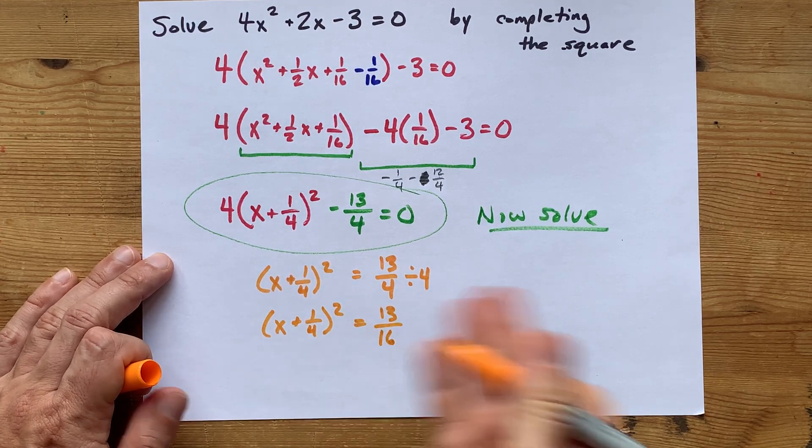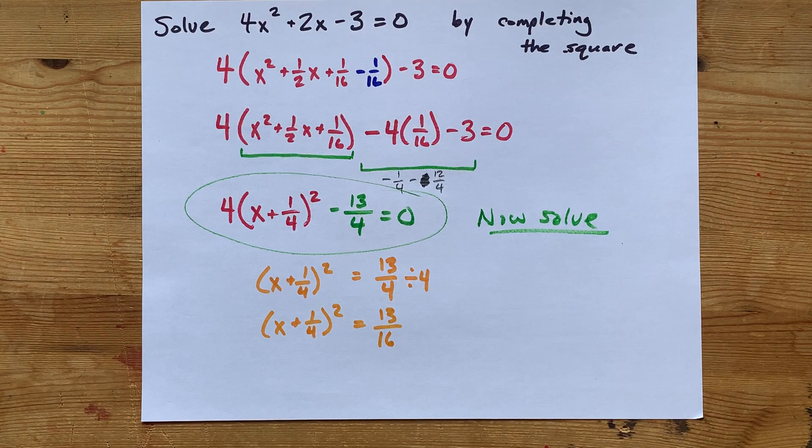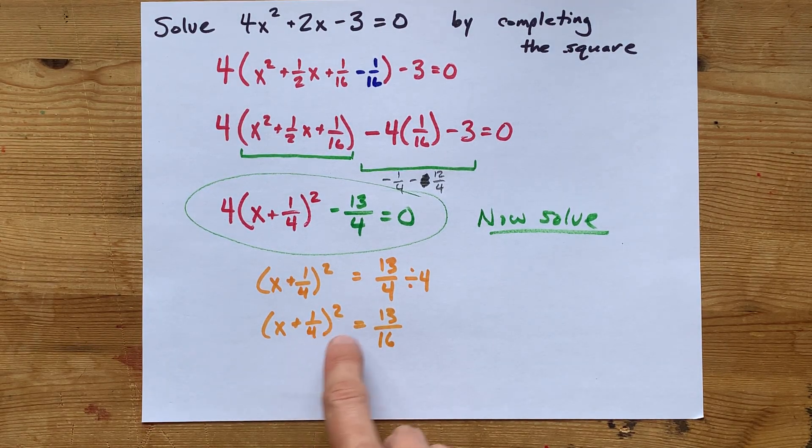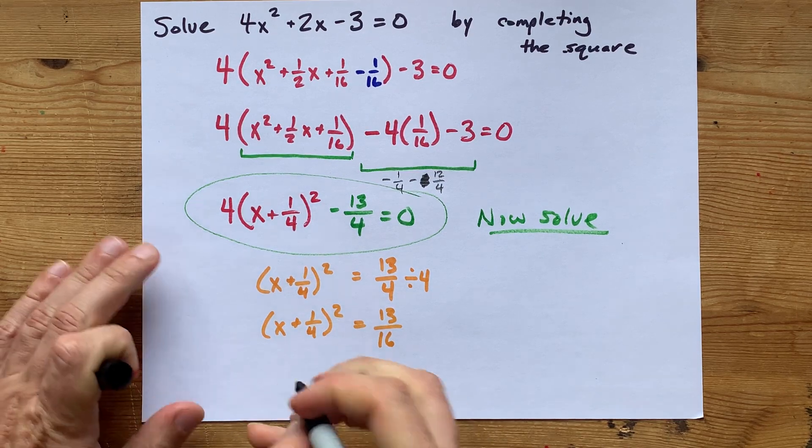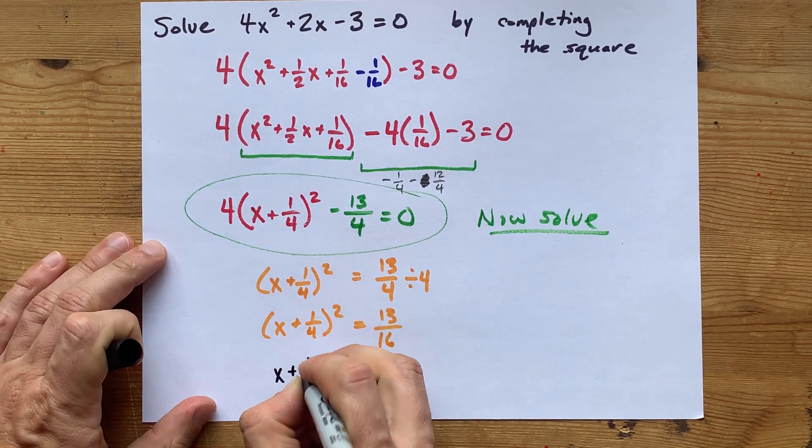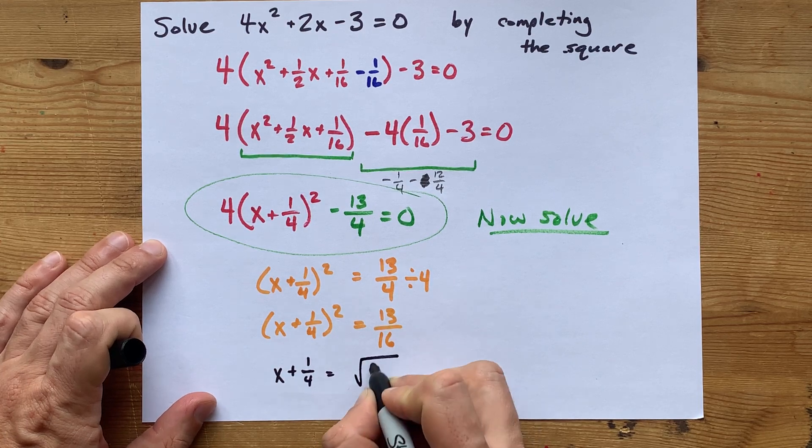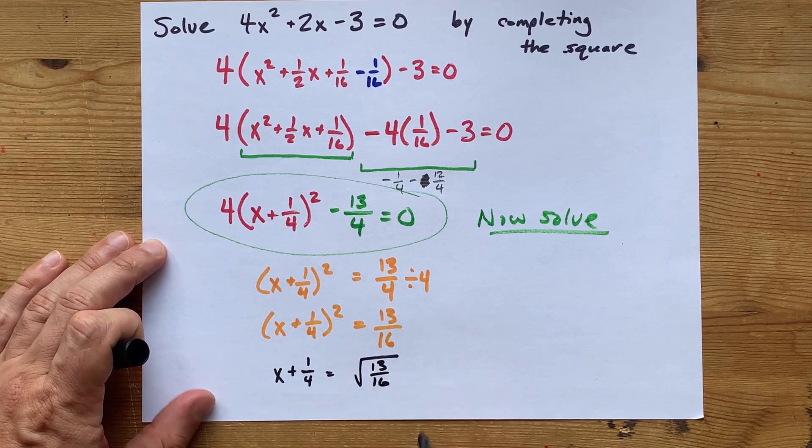Oh, these numbers are going to be absolutely brutal. So, in order to undo my squared, I need to do the square root of the other side. So, X plus a quarter is going to be the square root of 13 sixteenths over here.